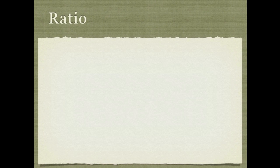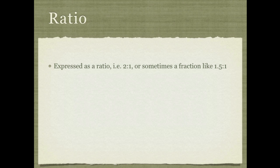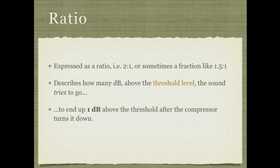So if we go in detail with this a little bit more, that control is expressed as a mathematical ratio. So you'll see often 2 to 1, 3 to 1, 5 to 1, and sometimes you'll get that in fractions, 1.1 to 1, 1.5 to 1, and so on. The way to interpret this is that it describes how many decibels above the threshold level the sound can try to go to end up being just 1 decibel above the threshold after the compressor does its thing.